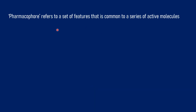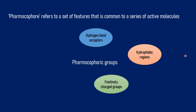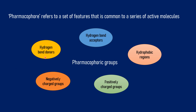A pharmacophore is a set of features common to a series of active molecules. In pharmacophore modeling, we take different ligands and study their properties. The different properties studied can be hydrogen bond donors, hydrophobic regions, positively charged groups, negatively charged groups. These are known as pharmacophoric groups. We identify these pharmacophoric groups present in the different ligands and generate a pharmacophore model.